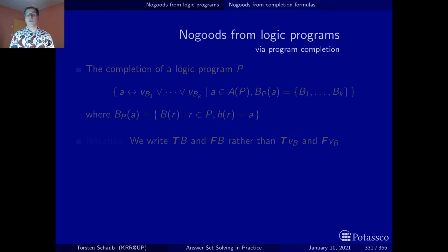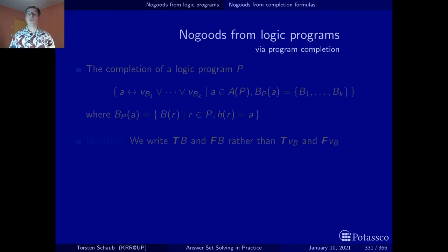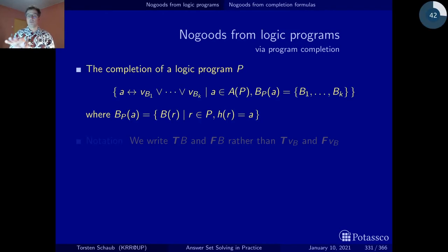First of all, recall from the part on the axiomatic characterization that completion gives us a set of equivalences. It says that an atom is equivalent to the disjunction of all bodies of rules in which the atom appears as the head. So we are doing here exactly the same thing, just that we start to optimize a little bit. Here is more or less the skeleton of the completion formula. The notation below simply collects all bodies of rules that have the atom A in the head.